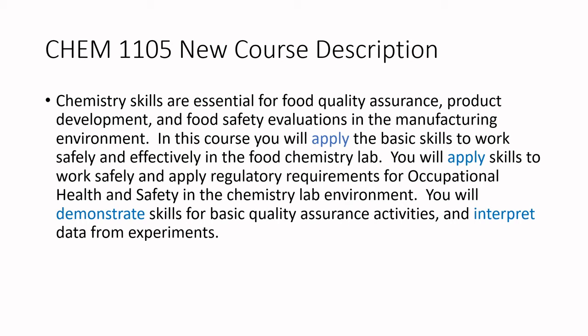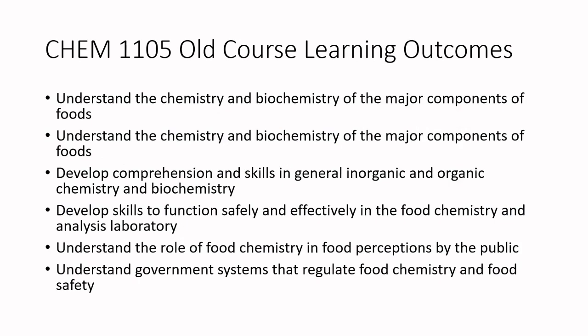From there, we break it down into the second level — what are the learning outcomes within this course? The old course — oh, let's look at those taxonomy verbs — 'understand.' I had not been trained in CBET at this point. 'Understand the chemistry' — that doesn't say anything. And 'understand the chemistry and biochemistry of major components of foods' is way too broad — in its own right that could be its own course — and the taxonomy is too low. We need to break this down into something much more meaningful.